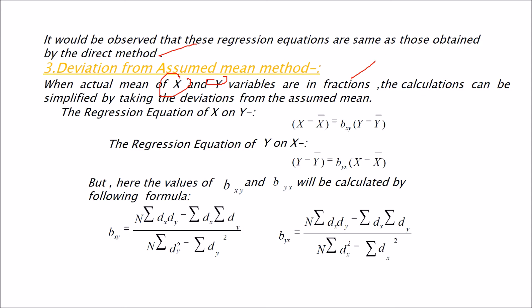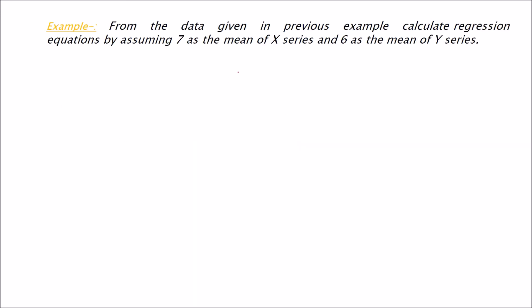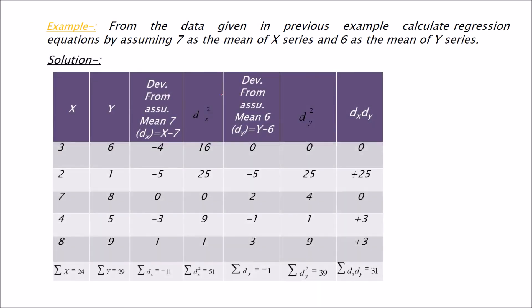So the regression equation of X on Y is now X minus X bar equals BXY times Y minus Y bar. This XY is subscript. And the regression equation of Y on X is Y minus Y bar equals BYX times X minus X bar. Now this BXY and BYX will be given like this: N into sigma DX DY. You will find out shortly what DX DY means. Sigma DX sigma DY. N into sigma DY square minus sigma DY whole square. Again DX whole square. That will be N sigma DX DY minus sigma DX times sigma DY. And we will just solve this by assuming the mean.